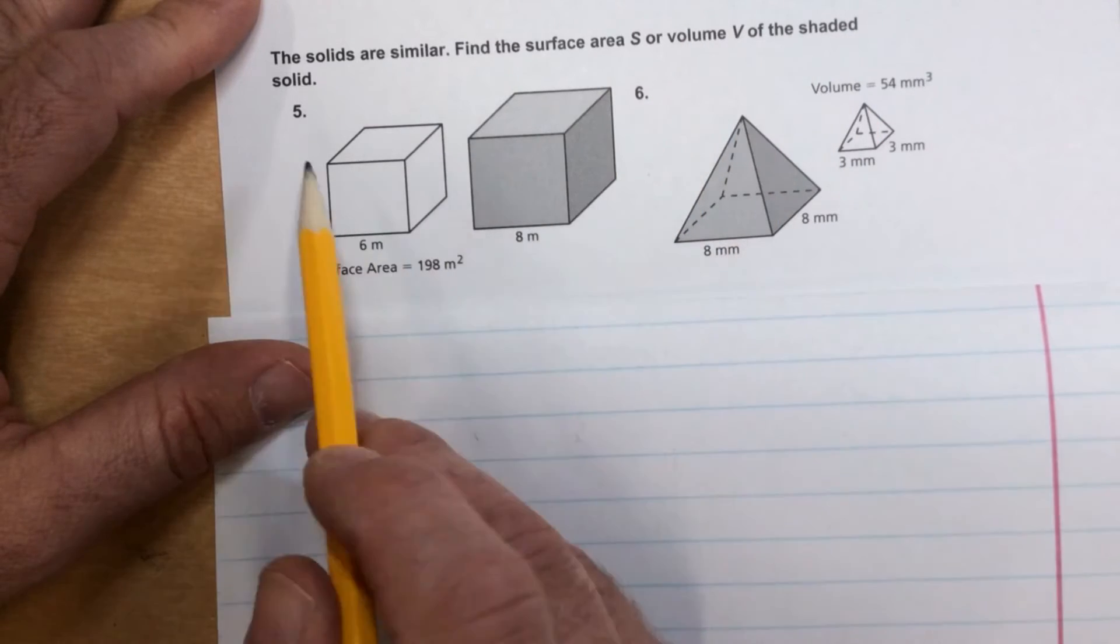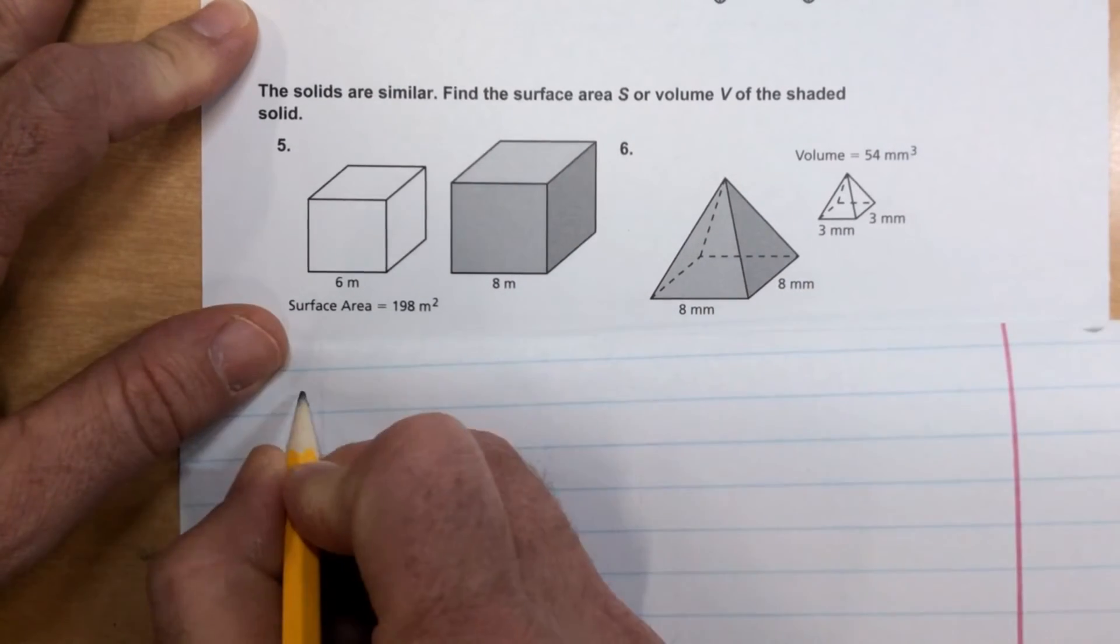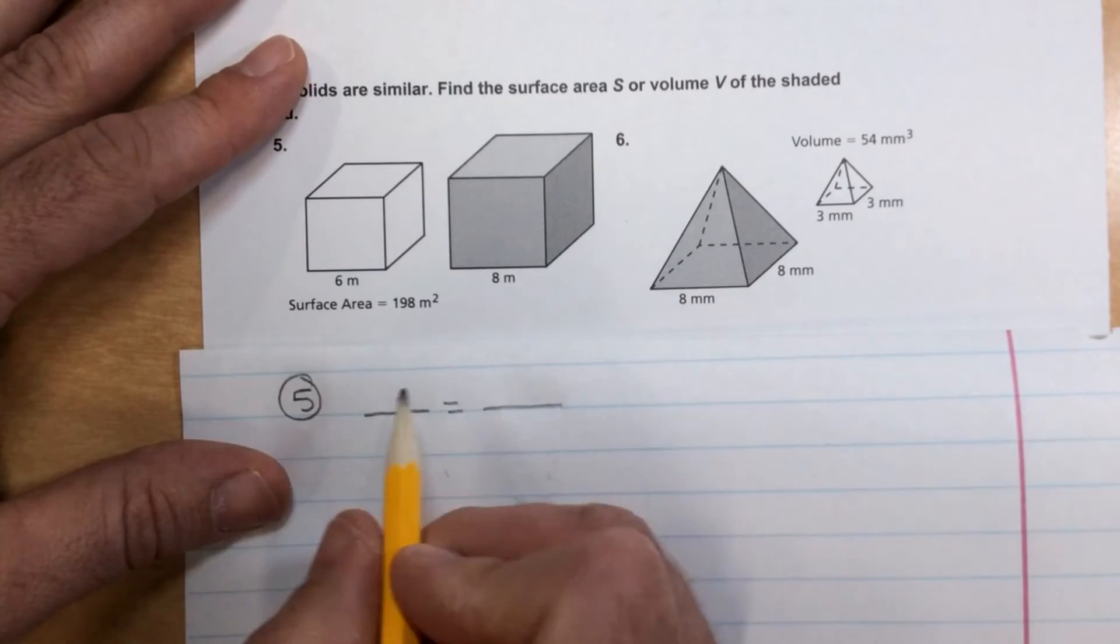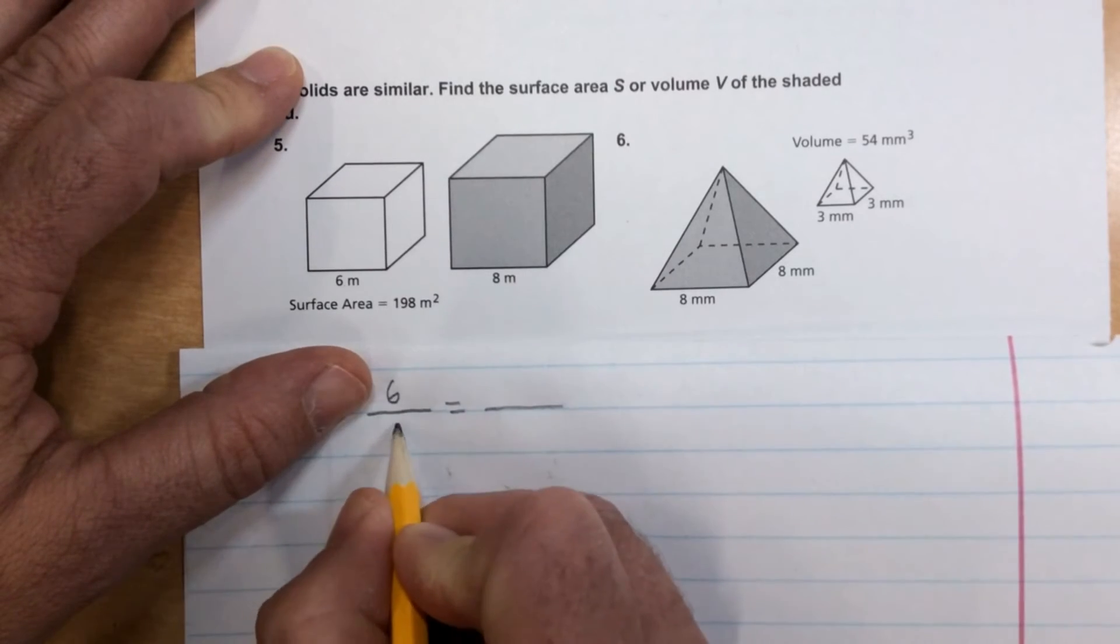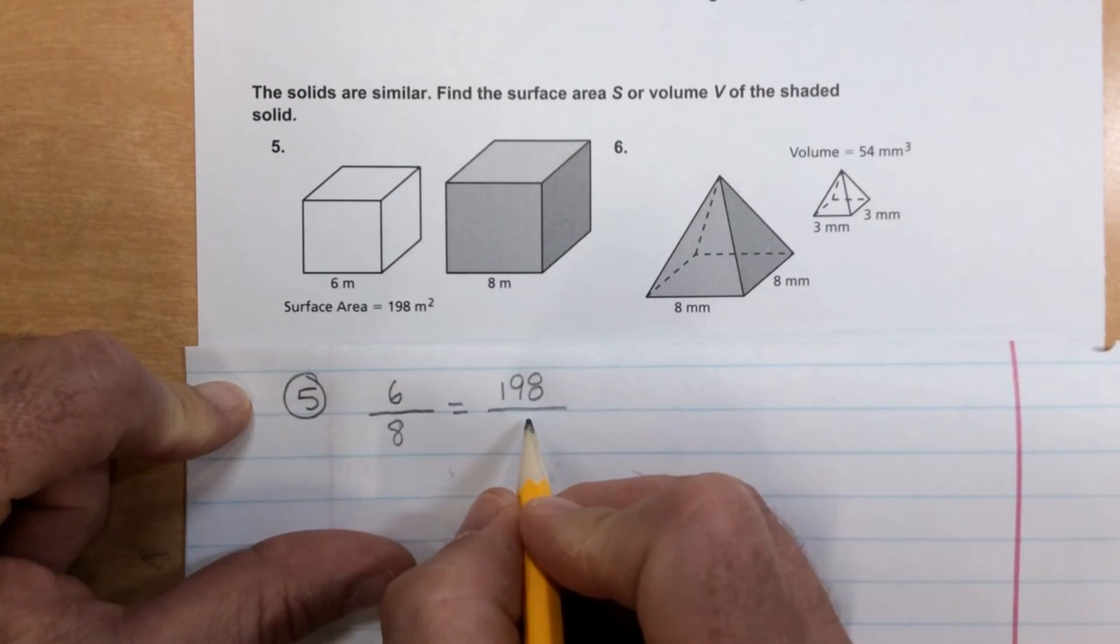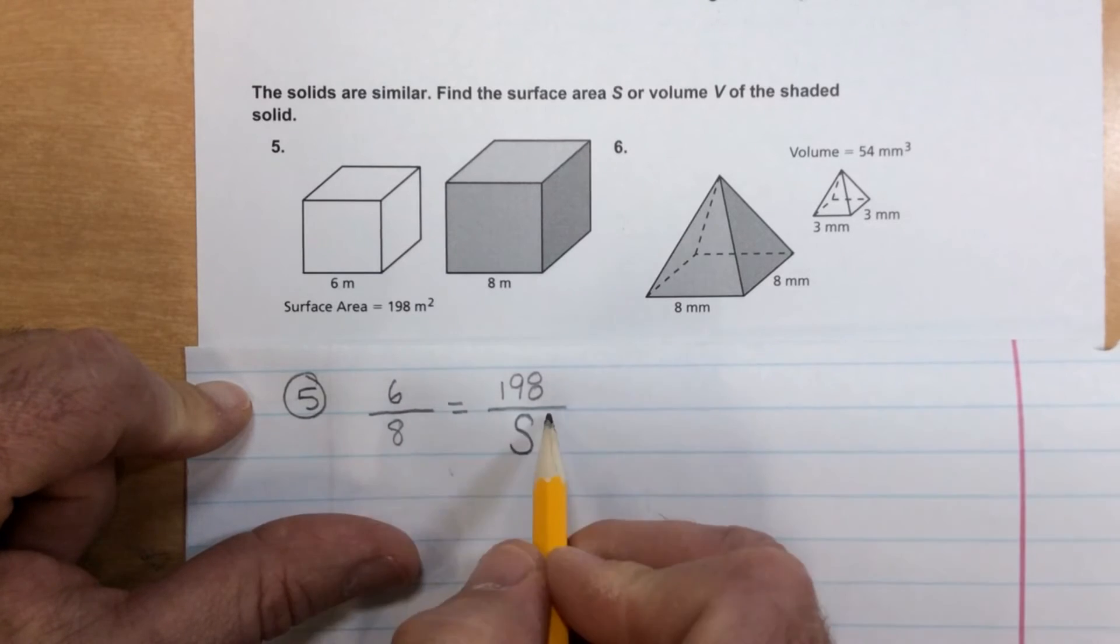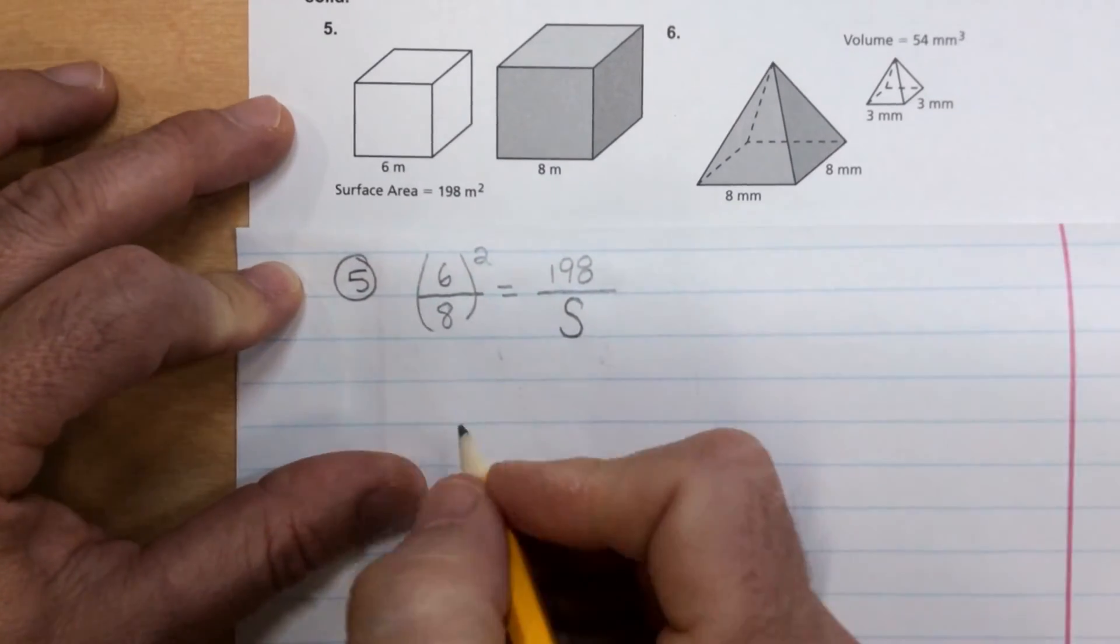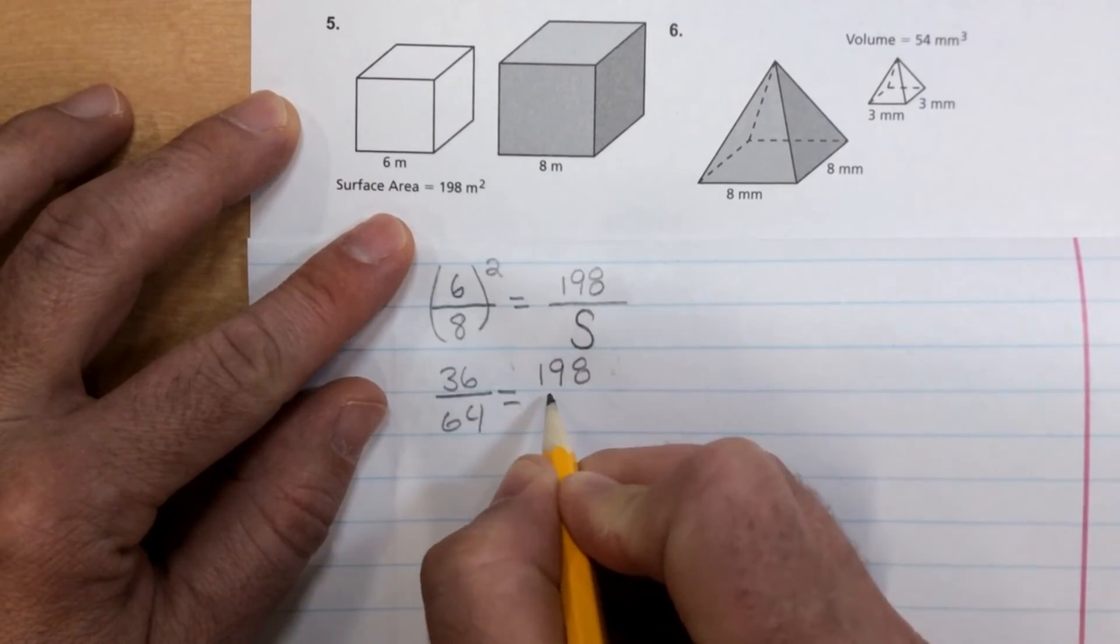Find the surface area or volume of the shaded solid. So the first one is surface area, and the second one is volume. So for number five. Now remember, when we set up our proportion here, there's a little bit extra that we have to do, but we'll see that in a second. So let's go smaller over larger. So we've got six over eight. Six over eight is the side length. And we have the surface area of the small one. So that's 198 here. And that's going to be proportional to the surface area of the larger. I'll just put a big S for that. But remember, since we're going to area, we take this linear measure and we had to square it. So if I square that, I get 36 on the top and 64 on the bottom equals 198 over S.